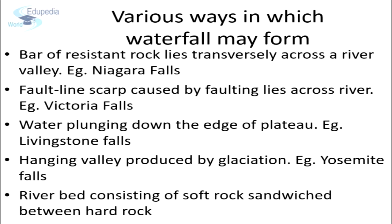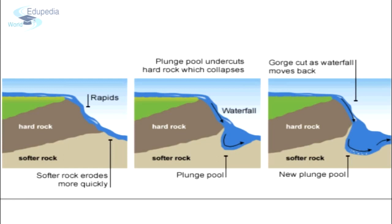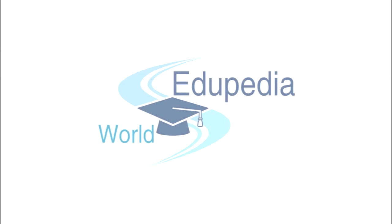Sometimes waterfalls are formed on river beds that consist of soft rock sandwiched between hard rocks. As you can see in this diagram, the soft rock is sandwiched under hard rock. As water erodes the softer rocks much faster than the harder rock, a waterfall is eventually formed. The power of falling water creates what we call the plunge pool. The harder rock is also gradually eroded and the waterfall ledge moves backwards. All this changes as the river moves out of the mountainous region and enters the plain.